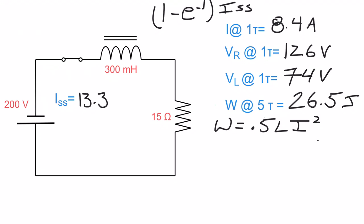That's a complete walkthrough. I used it at the first tau, but you could use it at the second, third, fourth, or fifth tau — it doesn't matter. The key formula is 1 minus e to the negative x, times ISS. That formula unlocks everything. The x is your time constant: negative 1 for the first, negative 2 for the second, and so on.